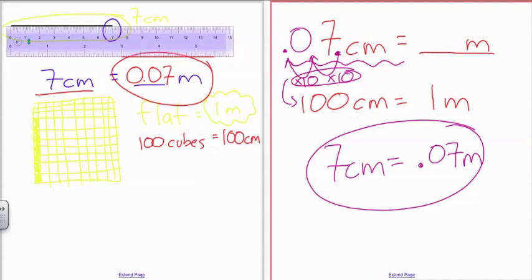So now I've given you two ways to conceptualize how we measure not only in centimeters but in meters. I think it's much more concrete to visualize our first method, where we dealt with a flat being equal to one meter, because we know a flat is made up of 100 cubes, and each meter is made up of 100 centimeters.